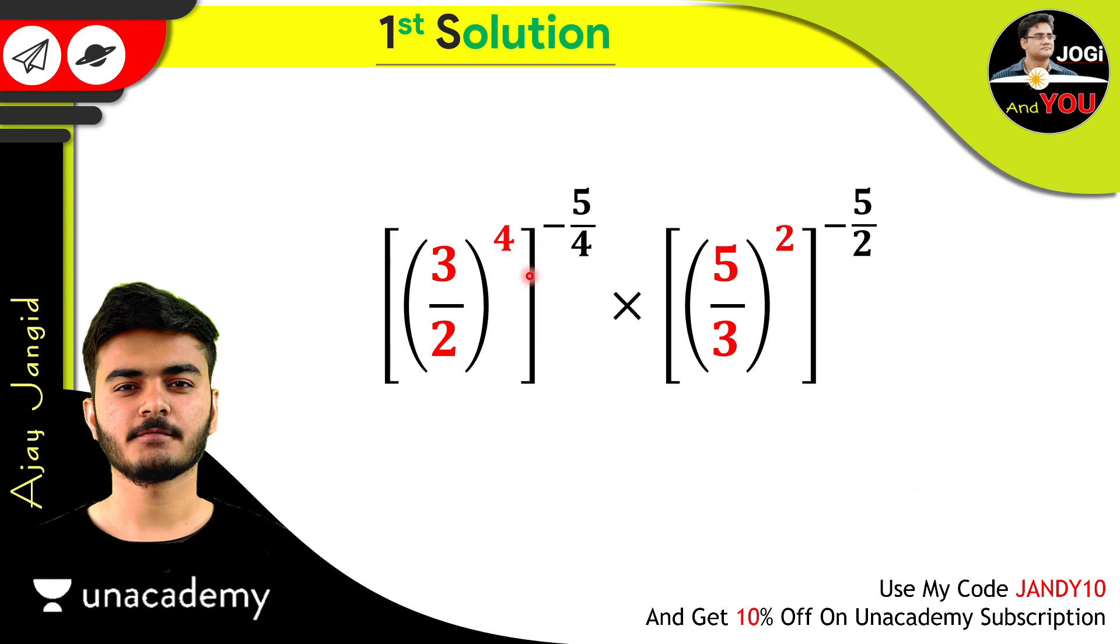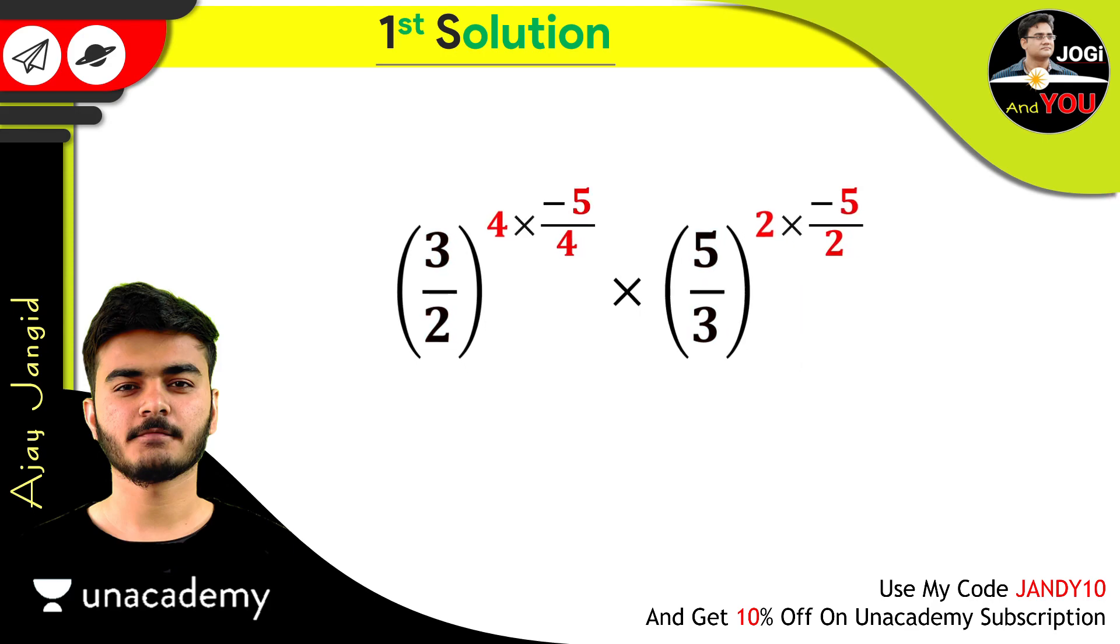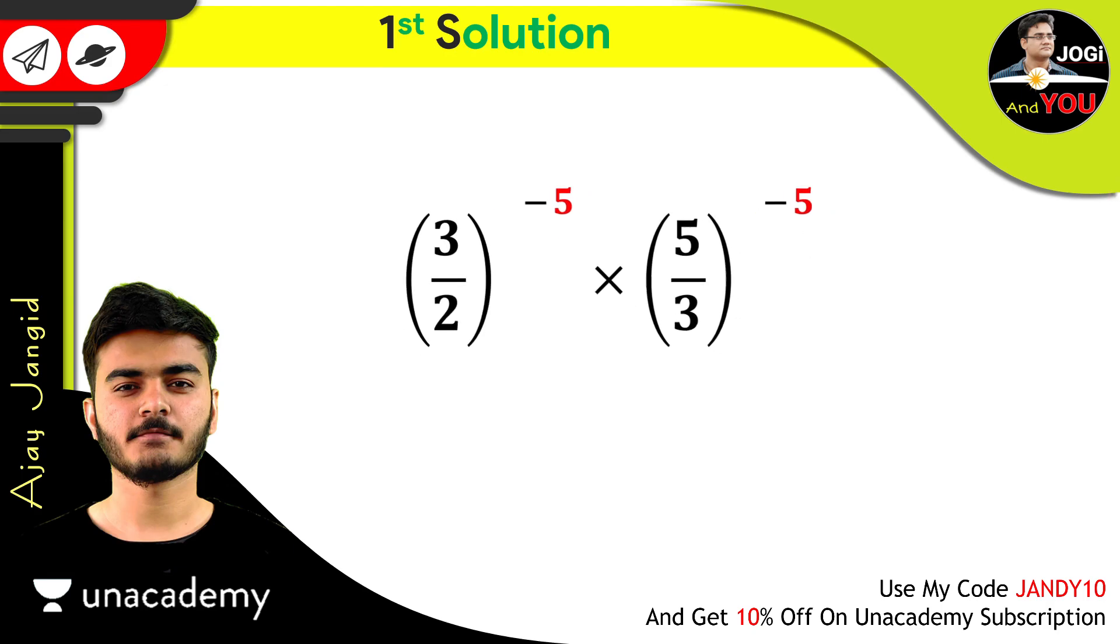Now, you know very well if there's any power on power, then it will be multiplied. So on the 3 upon 2, we have power 4. And even on that, we have power minus 5 upon 4. It's also same on the right side. We have a square and power minus 5 upon 2 on that square. So just do it like this. We have 4 multiplied by minus 5 upon 4. And 2 multiplied by minus 5 upon 2 in power of both these. Just cancel out 4 to 4. And cancel these 2. And now, we have minus 5 in the power of both the terms.